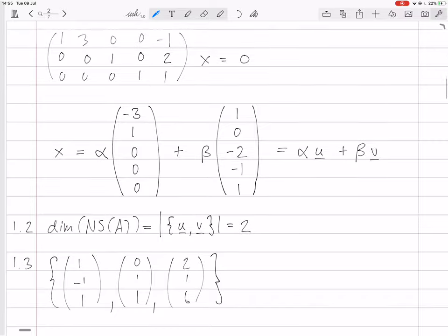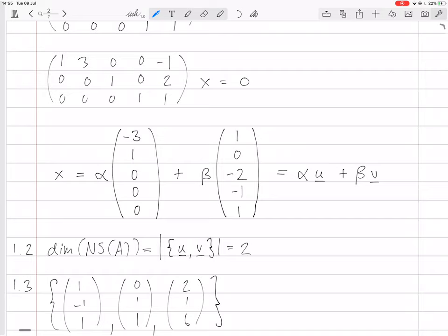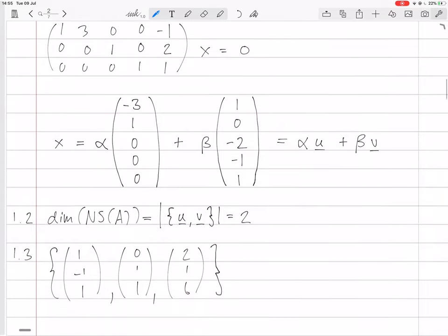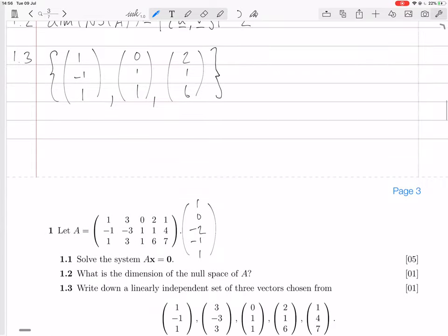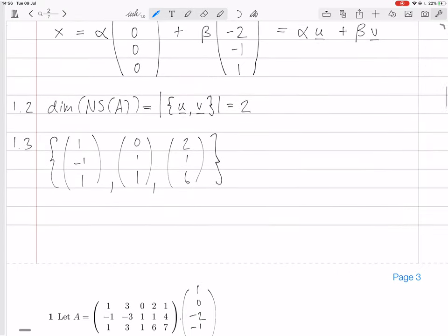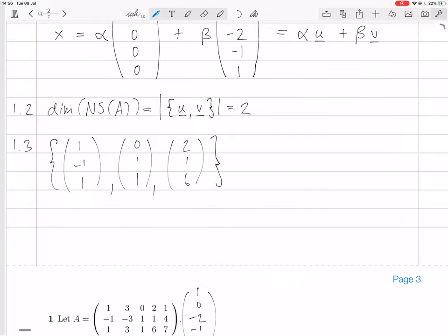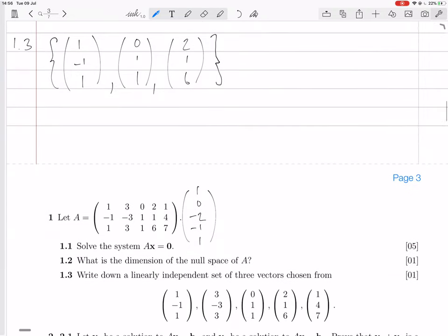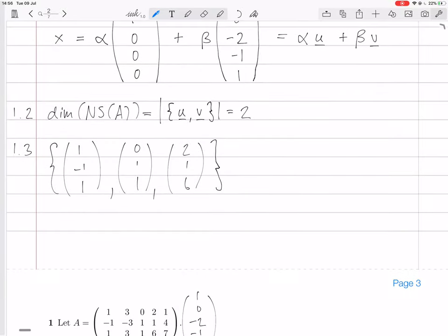Wait a second. Why are we getting a dimension of the null space being only 2? We're going to have three vectors. Yes, of course. Because these three vectors form the row space, and the dimension of the row space is equal to the number of columns of the matrix. This is fine. We're not finding a basis for the null space. We're finding a basis for the range of A, or for the row space of A. We don't need to know that. So these three vectors will work.